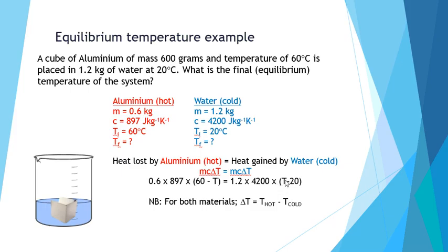In this scenario the water is warming up. So we put T, the unknown T, as the first of the two temperatures and subtract from it the 20. In both materials our delta T, or change in temperature, is the hot temperature minus the cold temperature.